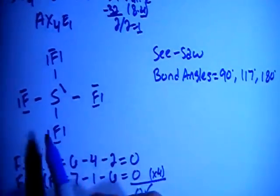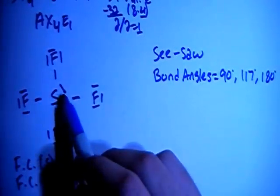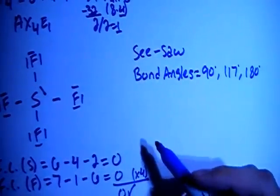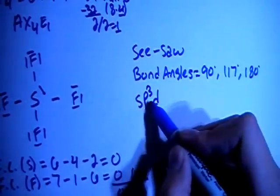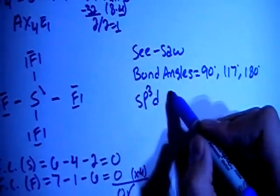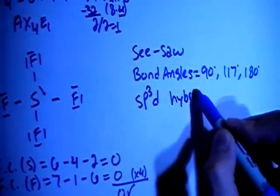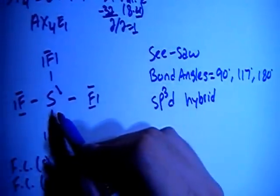In terms of hybridization, there's 1, 2, 3, 4, 5 electron groups, so you're going to need 5 orbitals. So sp3d—1s, 3p, 1d—sp3d hybrid, 5 orbitals, 5 electron groups.